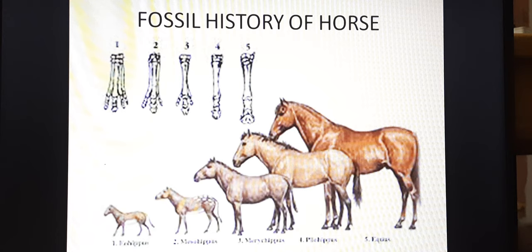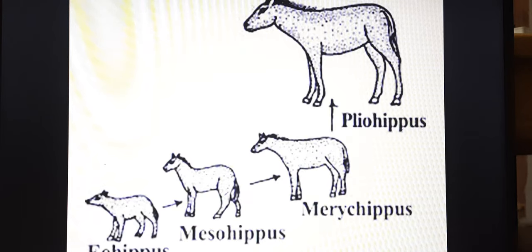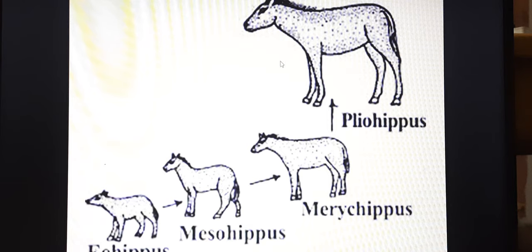Fossil history of horse. We have already got that the horse has changed from Eohippus, Mesohippus, Merychippus, Pliohippus, and then Equus. Equus is our modern horse. Eohippus, Mesohippus, Merychippus, and Pliohippus — all of them are extinct. But Equus — our modern horse — has survived. Since all these organisms have been found systematically, we can conclude that horses evolved from this systematic series: Eohippus, Mesohippus, Merychippus, Pliohippus, and Equus.